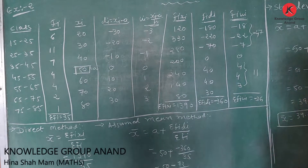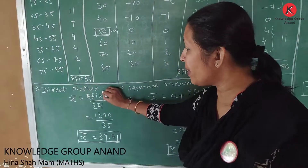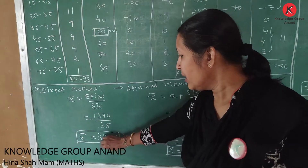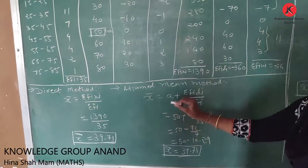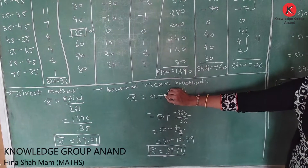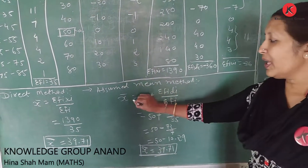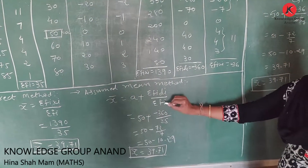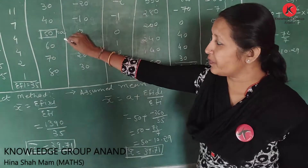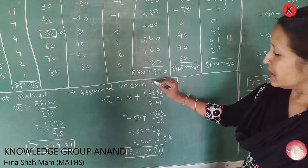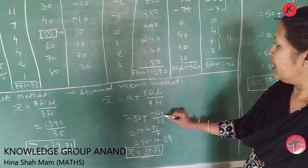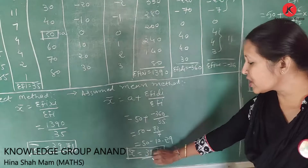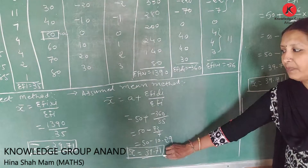First, by direct method: x̄ = Σfi·xi / Σfi = 39.71. Second, assumed mean method: x̄ = a + Σfi·di / Σfi = 50 + (-360)/35 = 50 - 10.29 = 39.71. Third, step deviation method: x̄ = 50 + (-36/35) × 10 = 50 - 10.29 = 39.71.